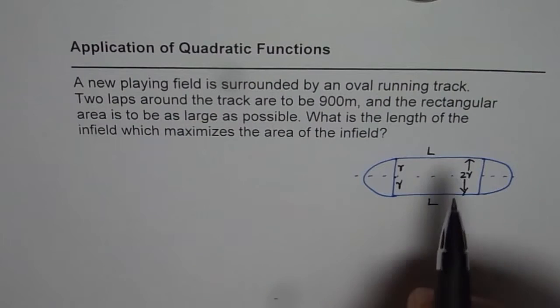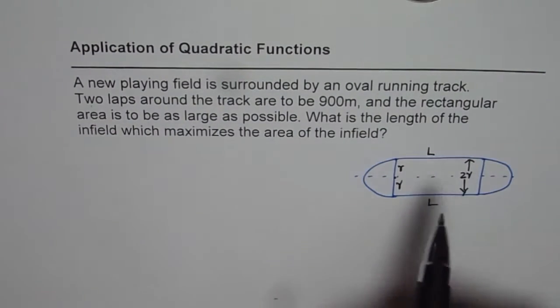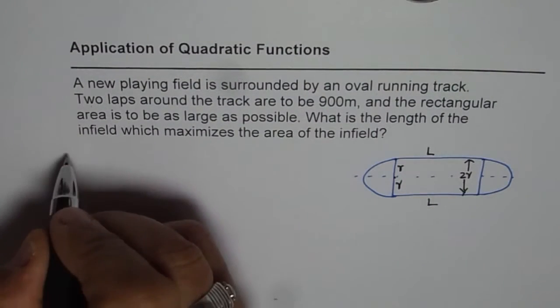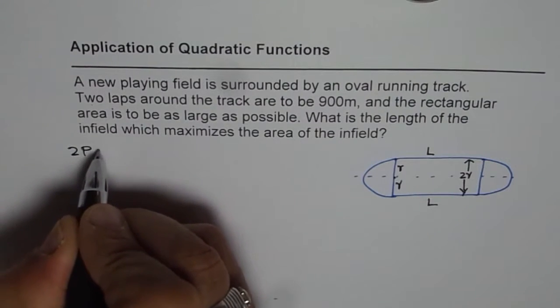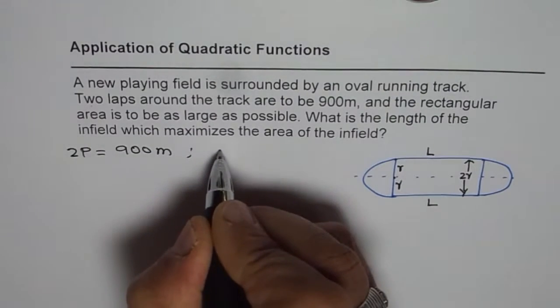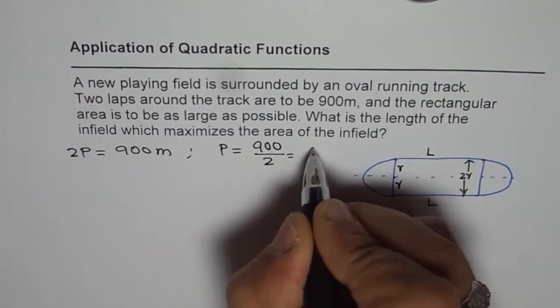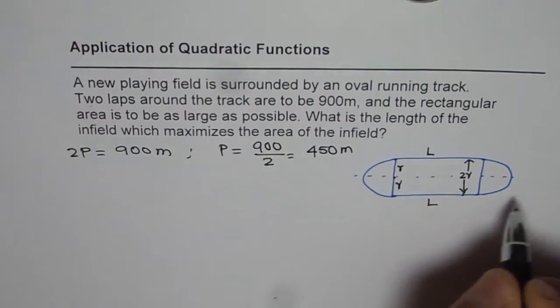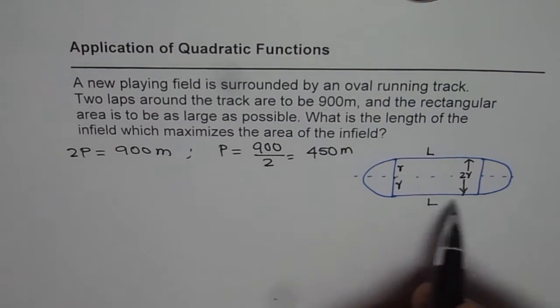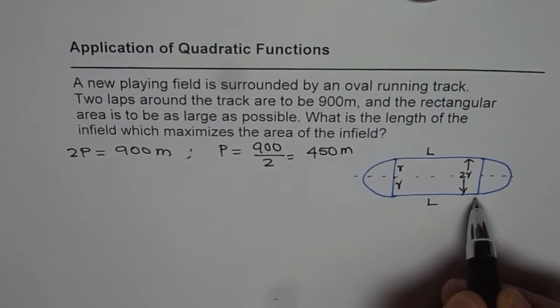In that case, what we know is that two laps around the track is 900 meters. So 2 times the perimeter is 900 meters. That means perimeter should be 900 divided by 2, that is 450 meters. So that whole perimeter is 450 meters. Now perimeter for this track is how much? Two semicircles will become one circle.